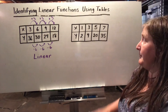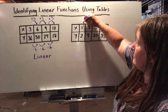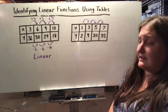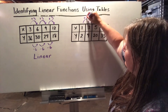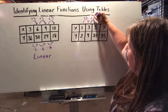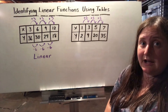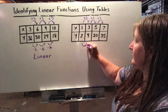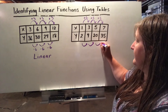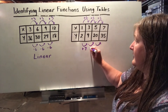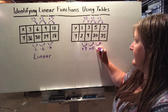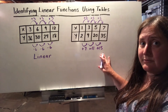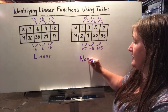In the next example, my input values are also increasing with each jump — this time by 2, 2, and 2, still a constant rate of change. But checking my output values, they increase by 7, then 11, then 15. Though they're increasing, it's not a constant rate of change. Therefore, this is a non-linear function.